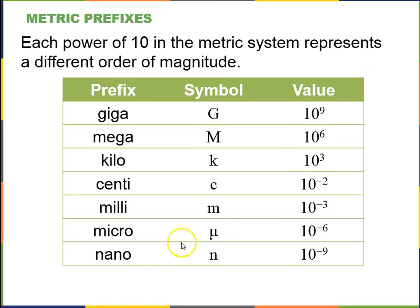Centi means a hundredth, milli means a thousandth, micro means a millionth, and nano means a billionth, one over a billion. And this little letter right here is the Greek letter mu, which stands for micro. So for example, 0.01 meters, another way of describing that is 10 to the minus 2 meters, and that's a centimeter.